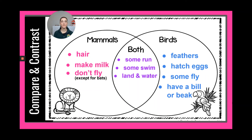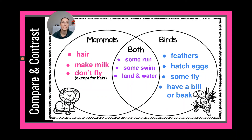Some mammals live on land and some live in water, and that's the same with birds — they live on land and in water. Some mammals like whales live only in the water. Birds don't live only in water, but penguins live both on land and in water.